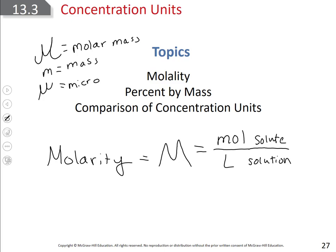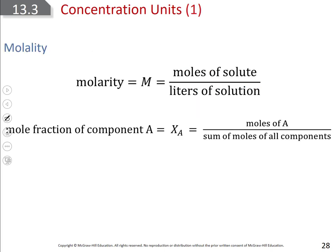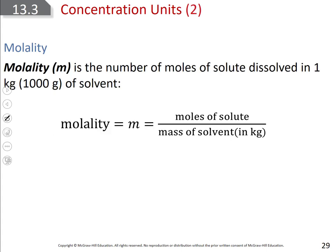The first new concentration unit is molality — spelled with an L instead of an R. Molality uses a little italic m as its symbol. Like molarity, it uses moles of solute in the numerator, but instead of liters of solution, it is divided by the mass of just the solvent in kilograms.